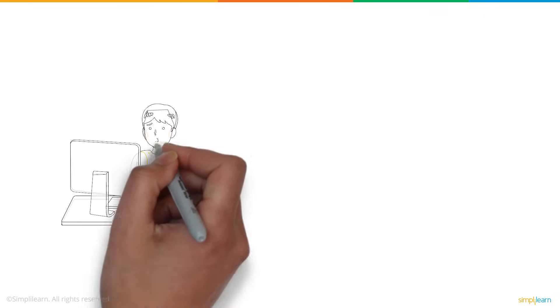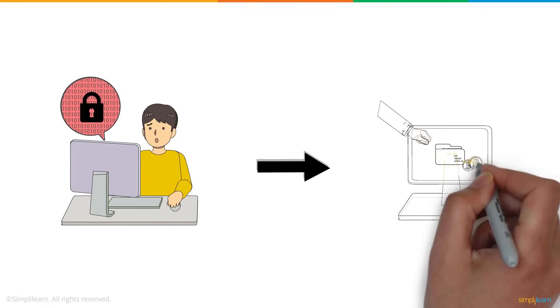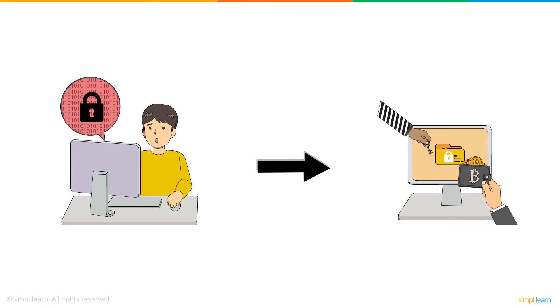The WannaCry crypto worm encrypted the data and locked the users out of their systems. For decryption of the data, the users were asked for a ransom of $300 to $600 in Bitcoin.